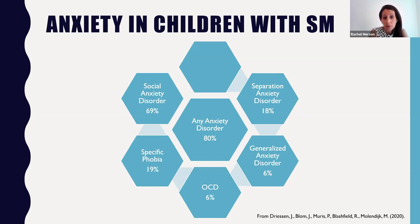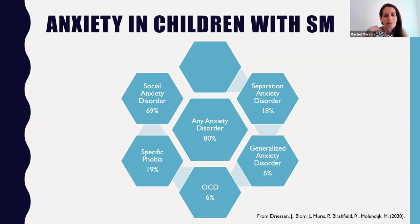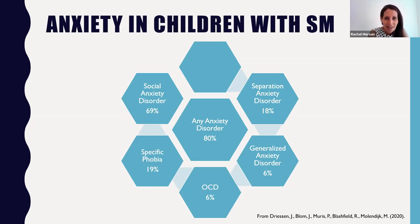That being said, there probably is a smaller subset of kids who might just have selective mutism and not experience many other forms of anxiety — just like some kids only have specific phobias or only have separation anxiety. The rate of anxiety overlap when we talk about diagnosis rates is high, and from my perspective as a clinician, the actual rate of anxiety in kids with SM is probably even higher. I encourage you all to look at this article and draw your own conclusions — it was really interesting and surprising for me.